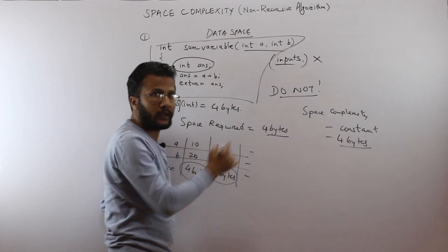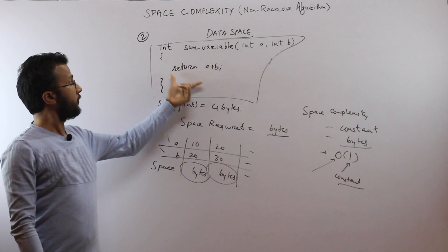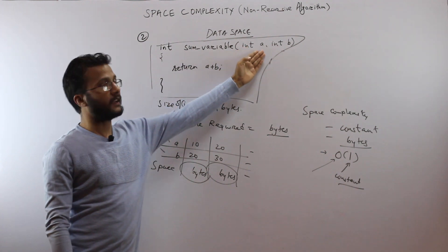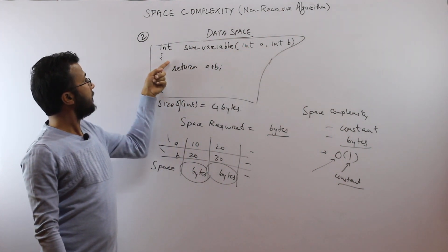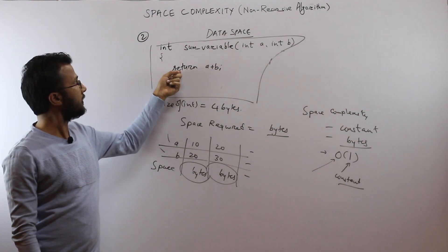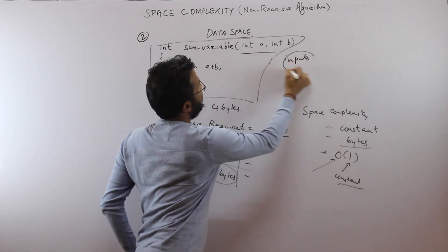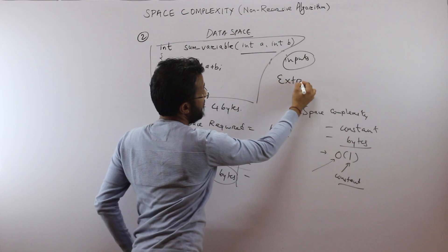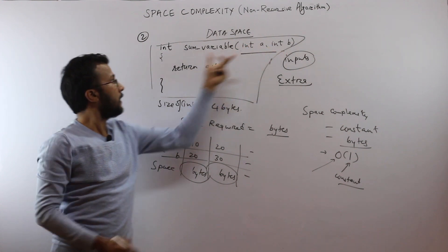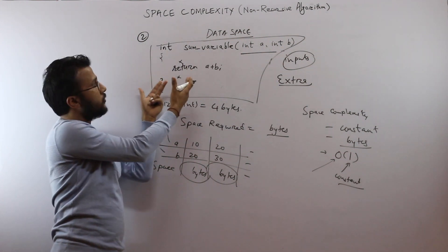This is our second example. There is a slight modification to the previous example. Everything is the same — we are trying to find the sum of two variables a and b — but we do not create any variable inside this function. We directly calculate the sum and return the value. When we talk about space complexity, we are bothered about the extra space consumed by the algorithm apart from the input, and we do not consider the input.